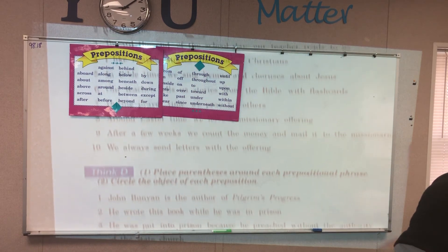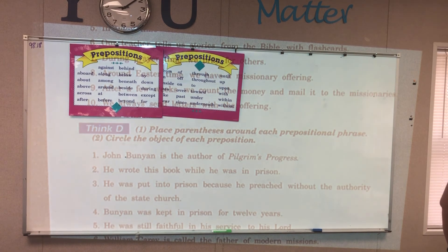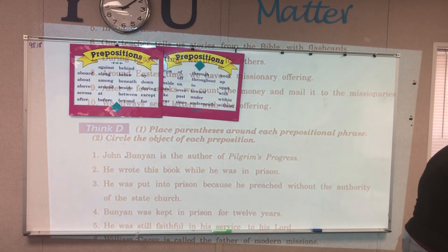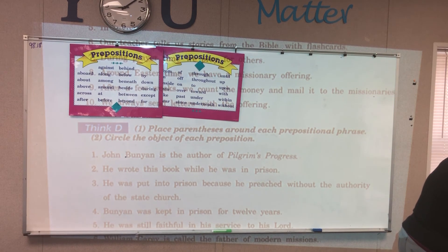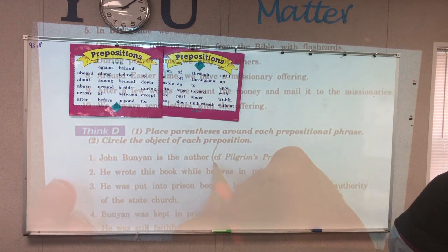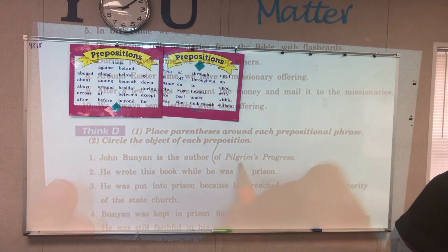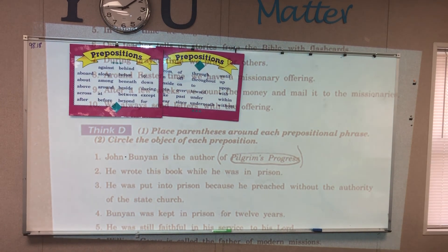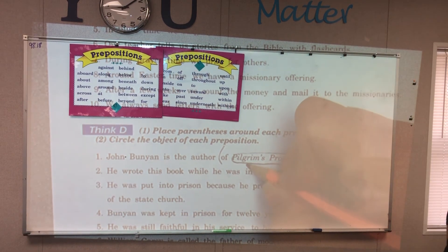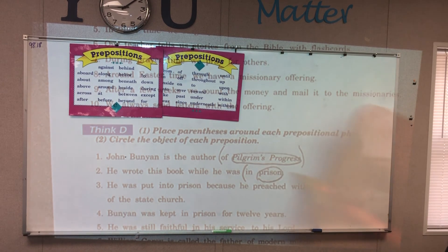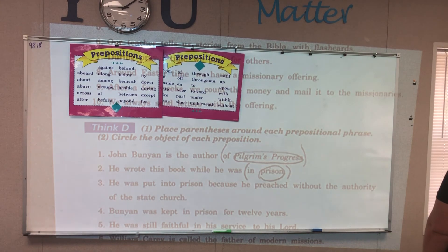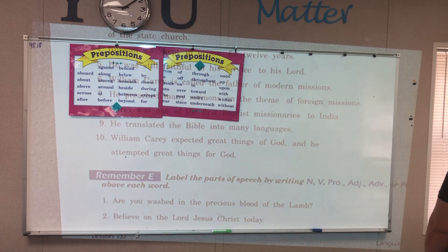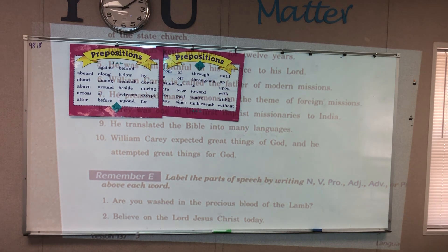How about Think D? 'John Bunyan is the author of Pilgrim's Promise.' 'Of' would be my prepositional word, and 'Pilgrim's Promise' is the noun — it's a book. That's the end of my prepositional phrase. 'He wrote this book while he was in prison.' Preposition: 'in.' Noun that comes after: 'prison.' My parentheses go after that one. And finally, remember E is to label each of those parts of speech by writing N, V, Pro, Adjective, Adverb, or Preposition. Go ahead and fill that out, boys and girls, and we will see you back for Lesson 138 tomorrow. Have a great day!